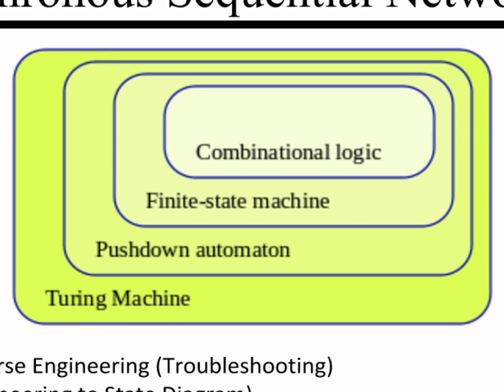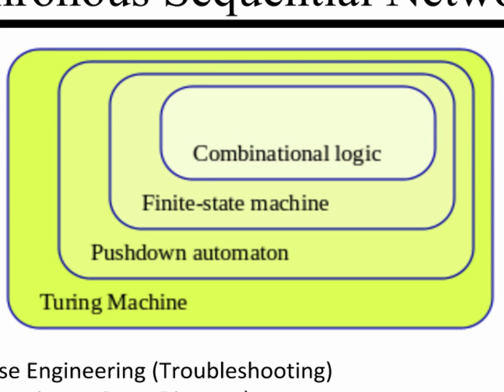We've been studying combinational logic. In chapter 6 we began to play with flip flops — they have some memory — and we began to climb out of that box and into finite state machines. In chapter 7 we're going to talk about Mealy and Moore finite state machines, then in chapter 8 algorithmic state machines, and in chapter 9 asynchronous sequential networks.